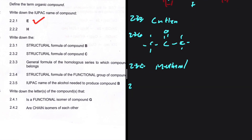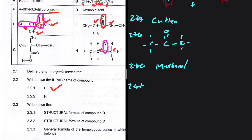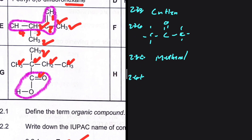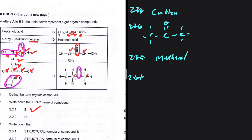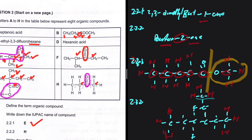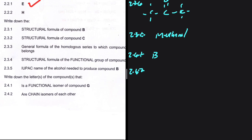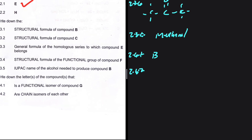For 2.4.1, we are looking for the letter of a compound that is a functional isomer of compound G. Compound G is a carboxylic acid with six carbons. We need an ester with six carbons — a functional isomer has the same molecular formula but a different functional group. Looking at compound B, it has six carbons, so the answer to 2.4.1 is B.